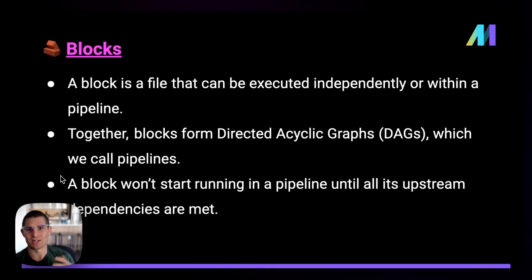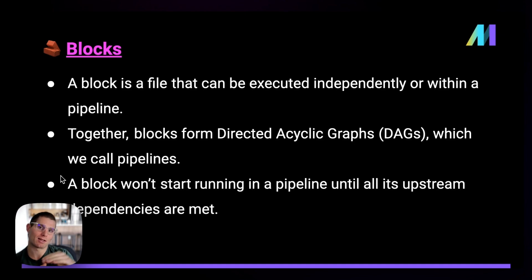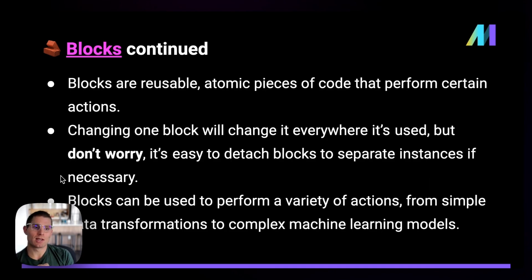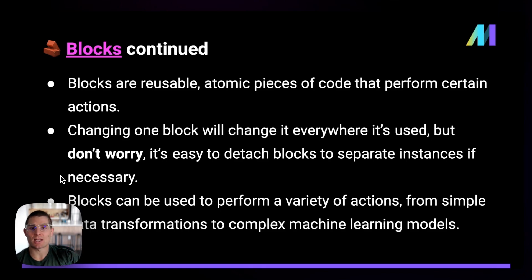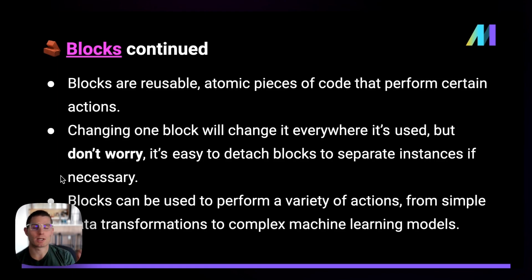Finally, blocks are just files — Python files, SQL files, R files — that can be executed independently or within a pipeline. As a part of a pipeline, these blocks form a directed acyclic graph, a workflow. The block dependencies are managed through Mage. It's important to mention that these are really just small pieces of code that Mage is orchestrating. Because a block is a file, changing it in one place means you're changing it everywhere else. But that's also cool — you might do the same operation in many different pipelines. Instead of writing the same code multiple times, which is an anti-pattern in software engineering, you can use one block and copy that over into your other pipelines. We make it really simple to duplicate blocks, separate that logic if you need to, and create something new if necessary.